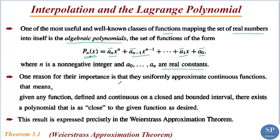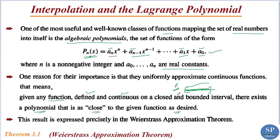One reason for their importance is that they uniformly approximate continuous functions. That means suppose we have a function f which is defined and continuous on a closed and bounded interval — we can find a polynomial that is as close to the given function f as desired. This is what is called interpolation.